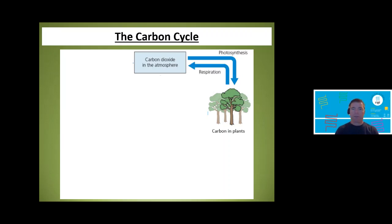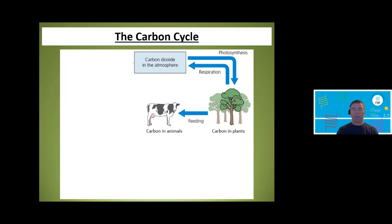Plants also respire, and the equation for respiration looks like the opposite of photosynthesis — carbon dioxide is released into the atmosphere. There's more carbon dioxide taken up by plants than is released in respiration because a lot of that carbon is incorporated into the body of the plants, the tissues or biomass. That carbon in plants can be passed on into consumers when they feed. Some of it will be incorporated into animal tissues as carbon compounds — carbohydrates, fats, proteins. But animals also respire, so respiration again returns carbon dioxide to the atmosphere.